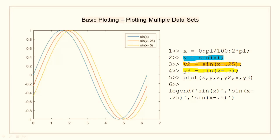I will also add a legend so it becomes clear which line is what. The blue line represents sine of x, the orange line represents sine of x minus pi by 4, and the yellow line represents sine of x minus pi by 2.